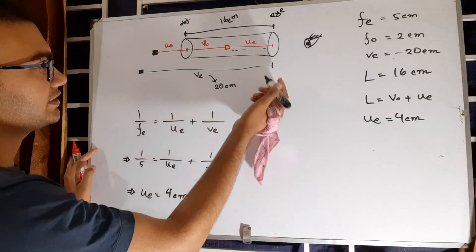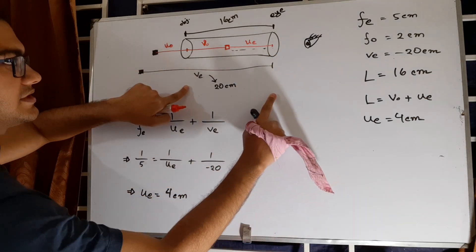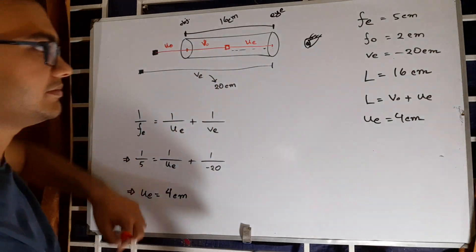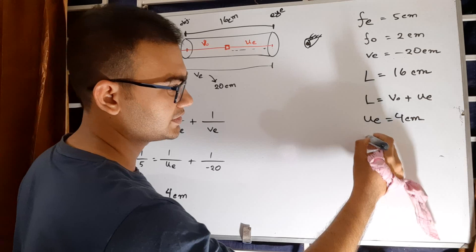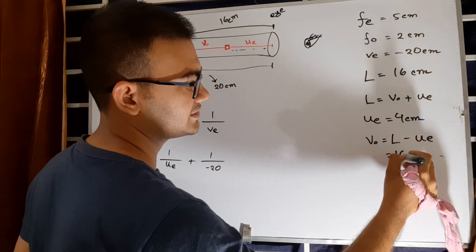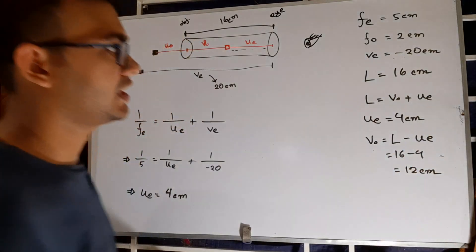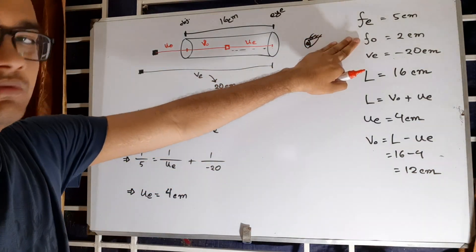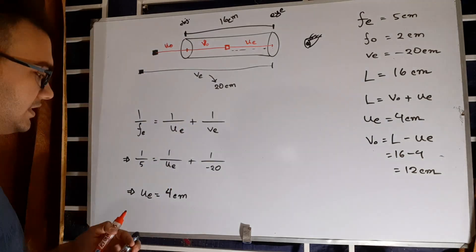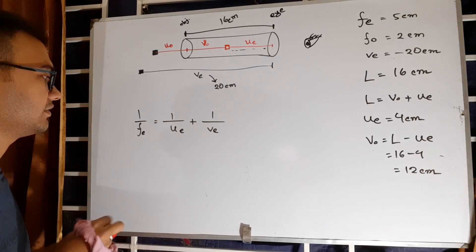The total tube length was given as 16 centimeters and U_E is 4 centimeters, so V_O = L − U_E = 16 − 4 = 12 centimeters. Now we have V_O = 12 centimeters, F_O = 2 centimeters, and we need to find U_O.